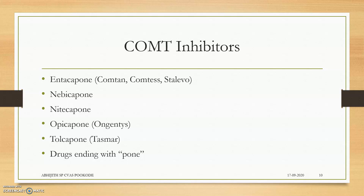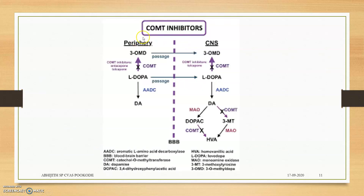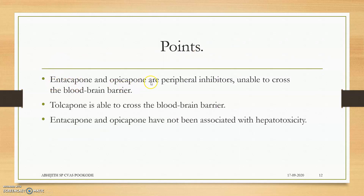Almost all drugs ending with '-capone' can be classified as COMT inhibitors. Entacapone and opicapone are peripheral inhibitors and are unable to cross the blood-brain barrier. Tolcapone is able to cross the blood-brain barrier; however, it has many problems with the liver — it is highly hepatotoxic. Entacapone and opicapone have not been associated with hepatotoxicity. These are the three key points you have to study.